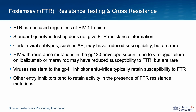The only real antiretroviral cross-resistance we worry about would be if a person had developed resistance mutations in GP120 due to virologic failure while receiving Ibalizumab or Maraviroc — other entry inhibitors — and in clinical practice, this phenomenon is quite rare. If a person does develop virologic failure while taking Fostemsevir, standard genotype testing does not give Fostemsevir resistance information, and checking for Fostemsevir resistance can be quite difficult; assays used for that are limited to research assays. Certain viral subtypes may have reduced susceptibility to Fostemsevir, but in clinical practice these are quite rare. Viruses resistant to the GP41 inhibitor Enfuvirtide typically do retain susceptibility to Fostemsevir, so if a person previously took Enfuvirtide as part of a salvage regimen and developed virologic failure, Fostemsevir usually retains activity.